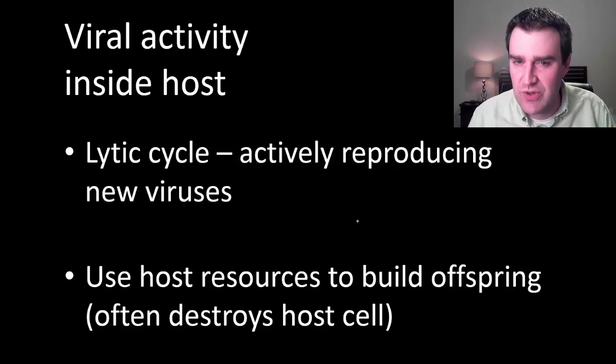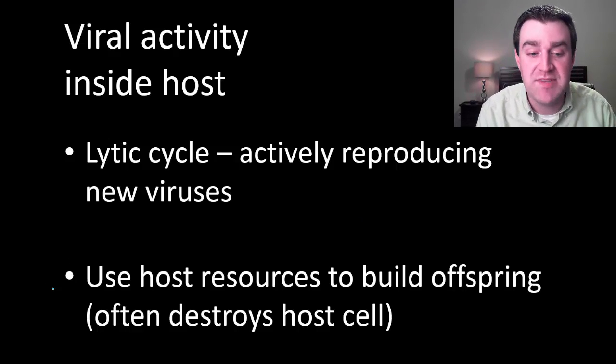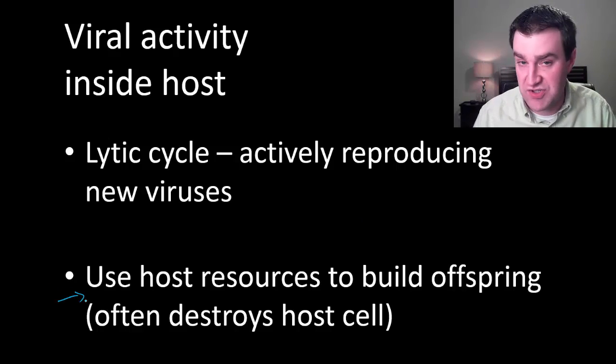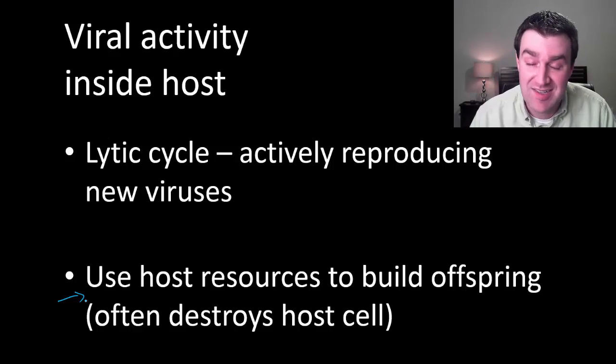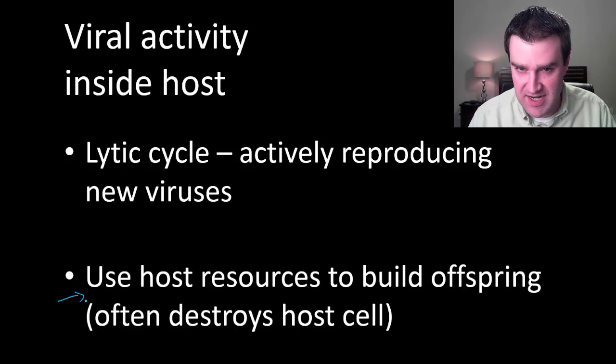That typically doesn't happen in eukaryotic cells because eukaryotic cells are much bigger. But sometimes a lytic style attack might destroy eukaryotic cells because if the virus is using so many of the host cells resources, amino acids to build proteins, nucleotides to build nucleic acids, then maybe the host cell doesn't have enough left to do what it needs to survive. And so this is kind of what I would summarize. The lytic style strategy is a very active style of reproducing itself.